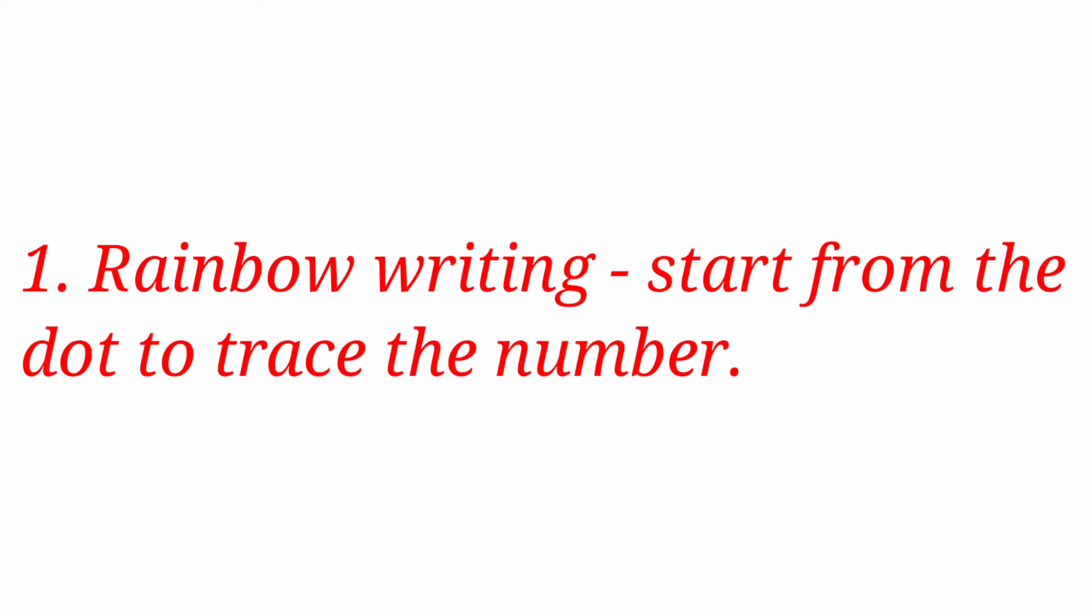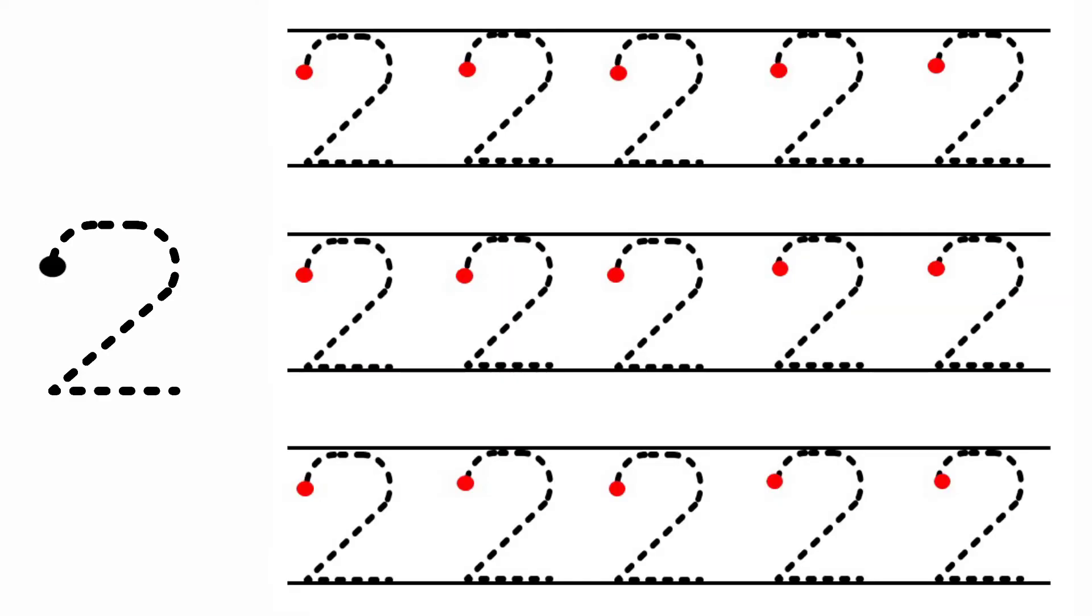Look at the first one, rainbow writing. Start from the dot to trace the number. Here from the dot we are going to trace number 2. Keep the finger on the red dot and slowly draw a curve, then put sleeping line. Now you got number 2.